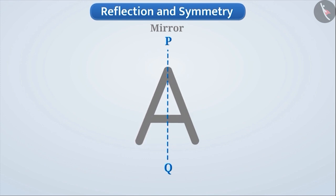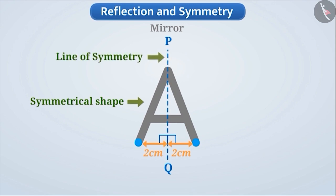We can also see that the distance of a point located on this half part of A to the left of line PQ and the distance of reflection of that point from the line PQ is the same. Keep in mind that here we are talking about perpendicular distance. That is, we will measure the distance from PQ at an angle of 90 degrees.